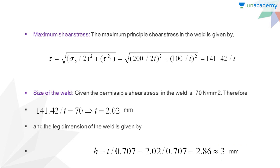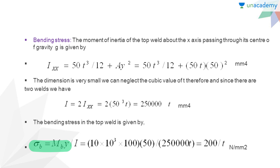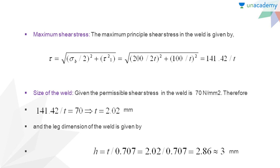The maximum shear stress can be calculated using the vector sum formula. The angle between the two vectors is 90 degrees, so tau = √((σ_B/2)² + τ₁²), where τ₁ is the primary shear stress and σ_B/2 is the secondary shear stress. Using Mohr's circle, the maximum shear stress from the bending stress is σ_B/2. Therefore, tau = √((200/2t)² + (100/t)²) = 141.42/t newton per millimeter square.